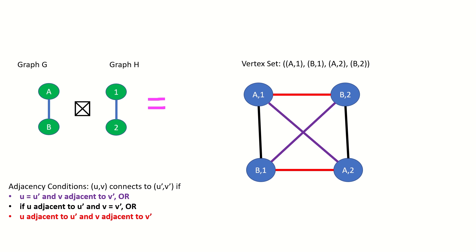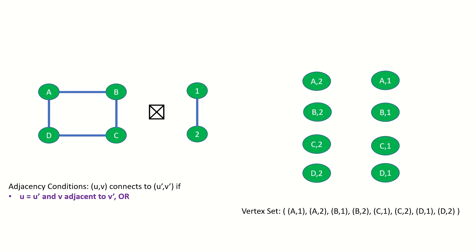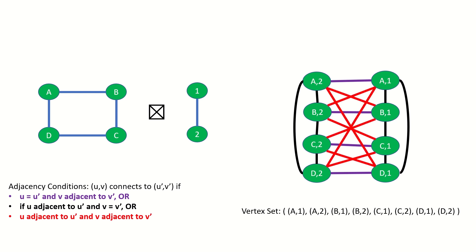So this is our result. Now let's find one final strong product together. What is the strong product of a cycle graph of four vertices and a path graph with two vertices? First, find the vertex set using the Cartesian product of sets. Next, determine the adjacencies according to each adjacency condition. The first condition connects vertices whose letters are the same and whose numbers represent adjacent vertices in the right graph. The third condition connects vertices whose letters are adjacent in the left graph and whose numbers are adjacent in the right graph. That's our result.